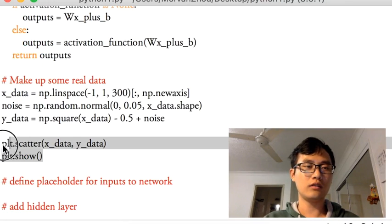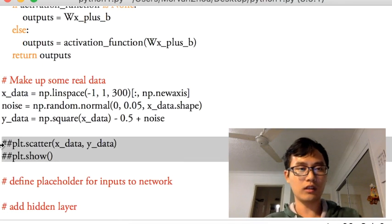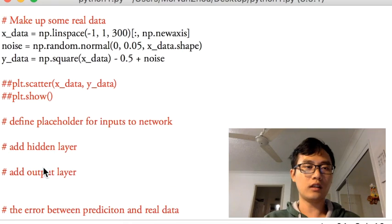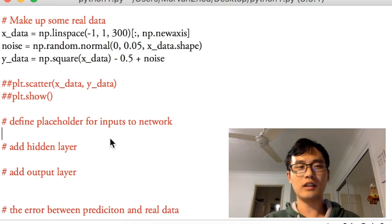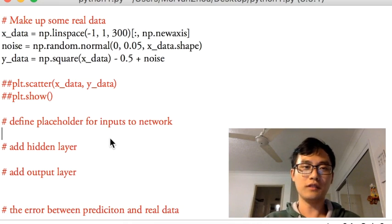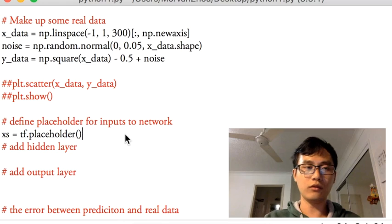Okay, let's just comment out and keep going. Now we have the real data, make up the real data, then we can define the placeholder for inputs of the network.